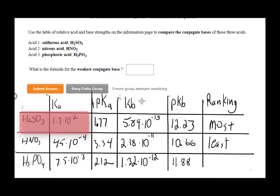And finally, notice again, the strongest acid with the smallest pKa value has the largest pKb value.